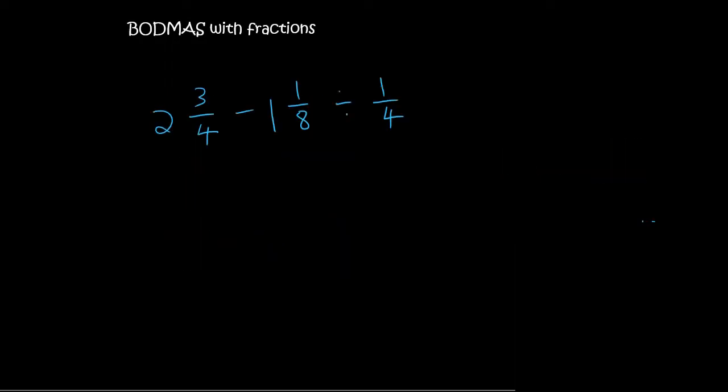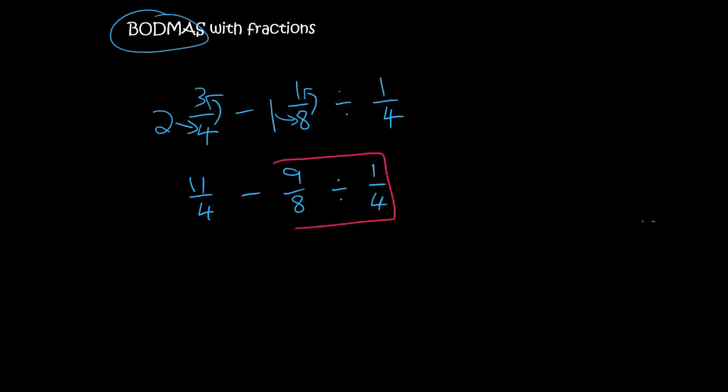Here's the next one. So the first thing you need to do is change everything to an improper. So that's 8 plus 3, that's 11 over 4 minus. This one is 1 times 8 plus 1 which is 9 over 8 divided by 1 over 4. Then always remember BODMAS. It will definitely be divide that comes before minus.